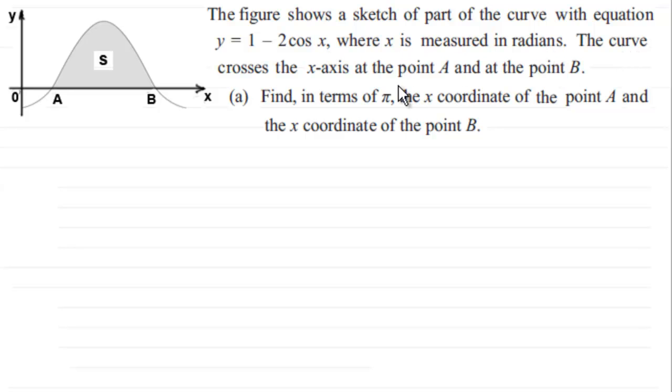And the curve crosses the x-axis at the points A and the point B. And what we've got to do is find in terms of pi, the x-coordinates of the point A and the x-coordinate of the point B.